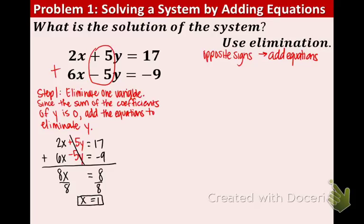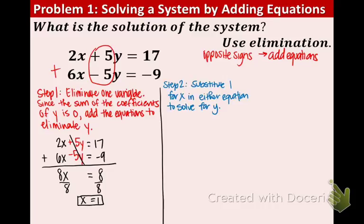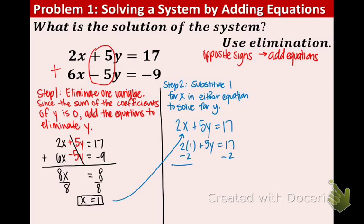Now in order to find the y value, just like the previous section, we substitute in the x value for one of the equations. It does not matter which equation you use. I'm going to choose the first equation because it seems a little bit easier: 2x plus 5y equals 17. The 1 goes in for x, so 2 times 1 plus 5y equals 17. Subtract 2 to the other side — we have 5y equals 15. Divide by 5, and we get y equals 3. So our coordinate point is (1, 3).